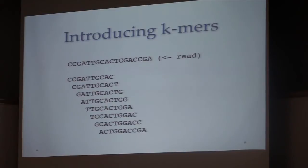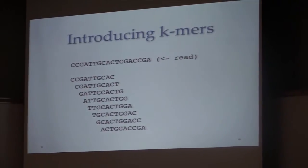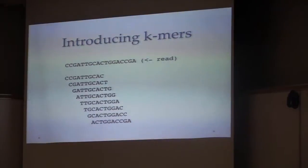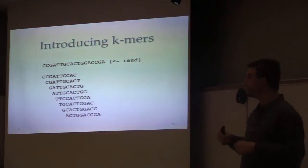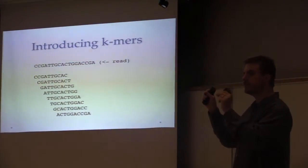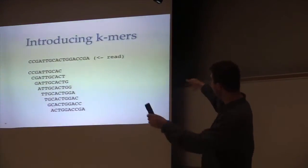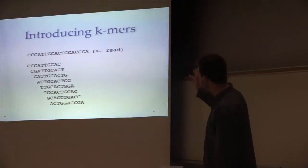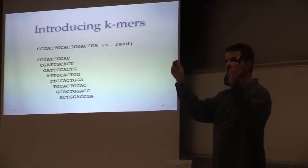So I'm going to start by introducing K-mers. It's an increasingly common concept in bioinformatics now, where you take a read, generally an Illumina read in our case, and you break it down into overlapping words of a fixed length. So in this case, K would be 10, I think.